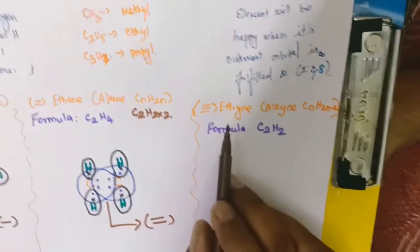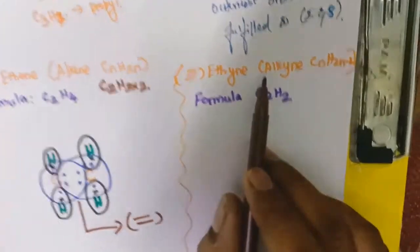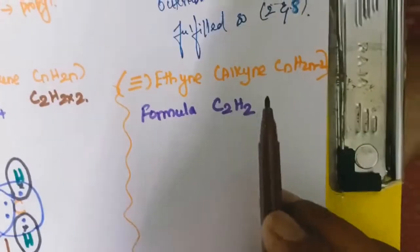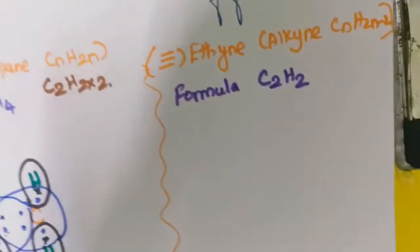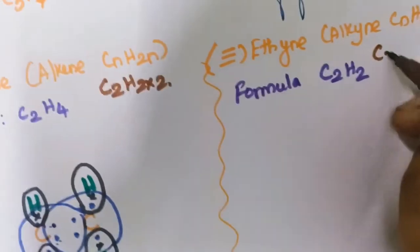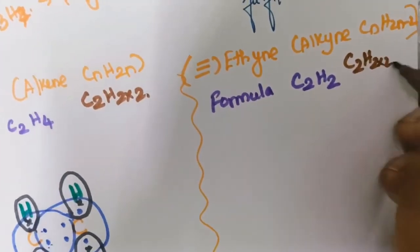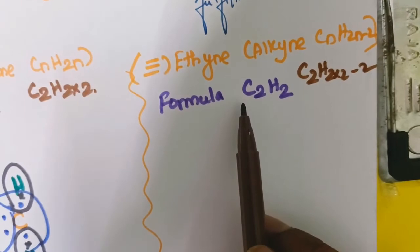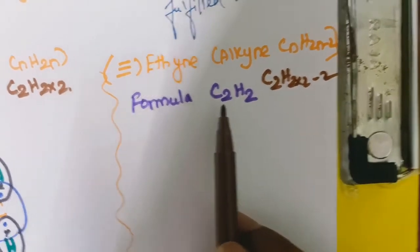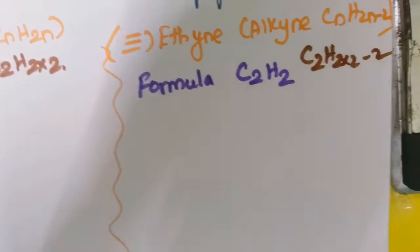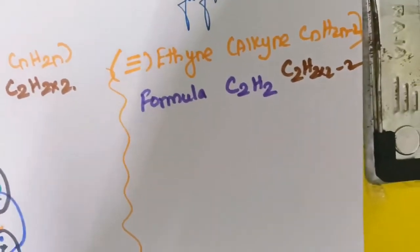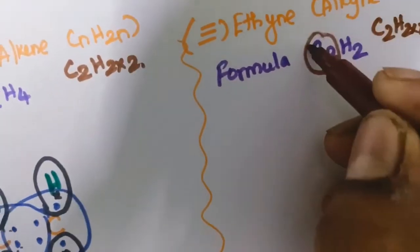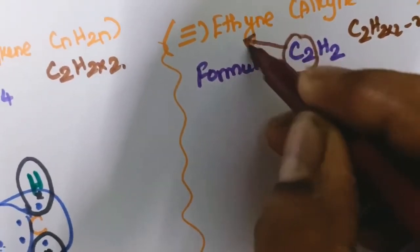Next, we are going to see about ethyne — alkyne. What is the general formula of the alkyne? CnH2n-2. Here I am taking 2 carbons: C2H, 2 into 2 minus 2 — the molecular formula is C2H2.